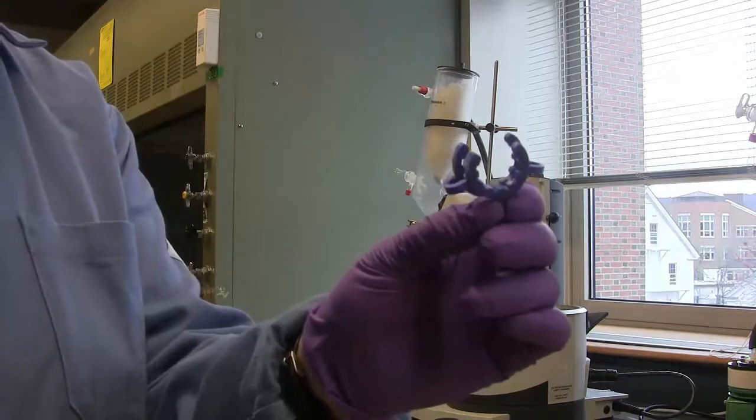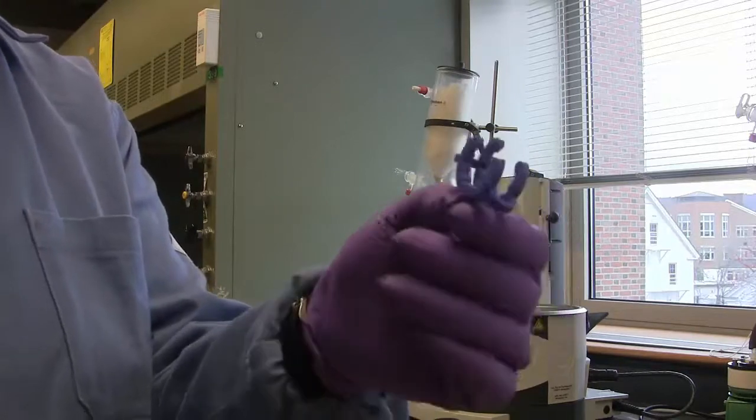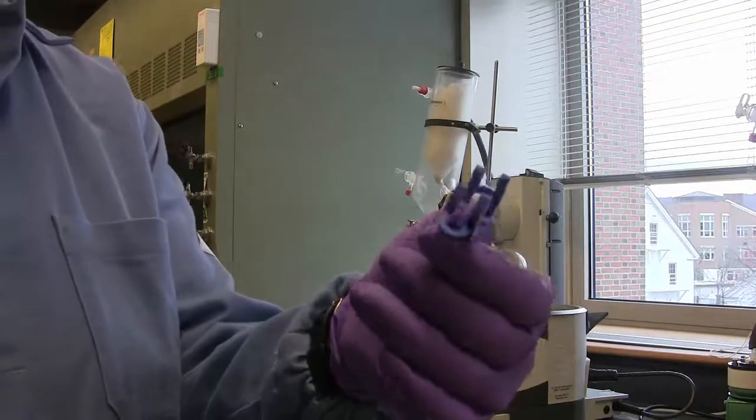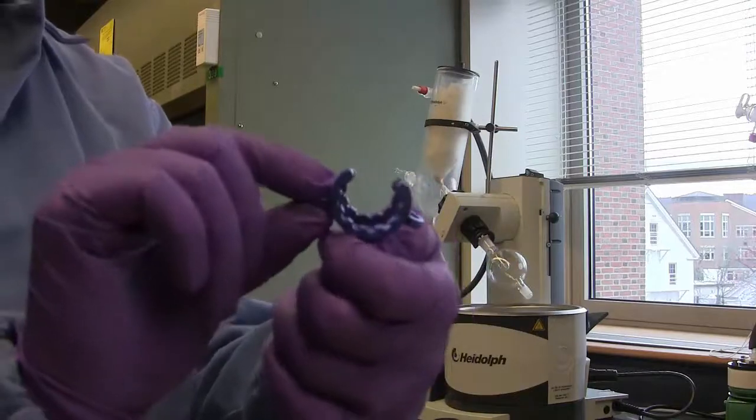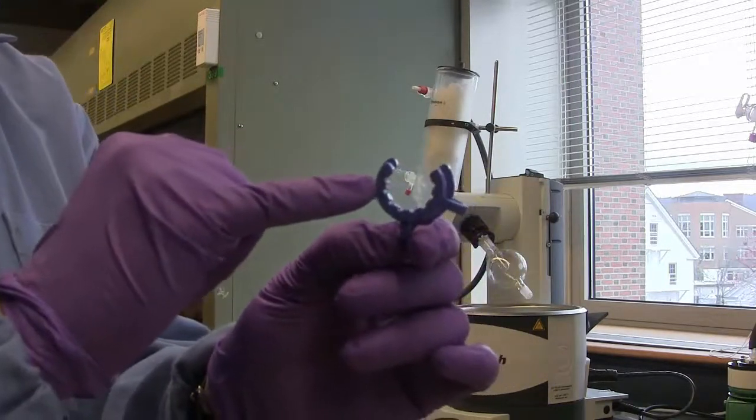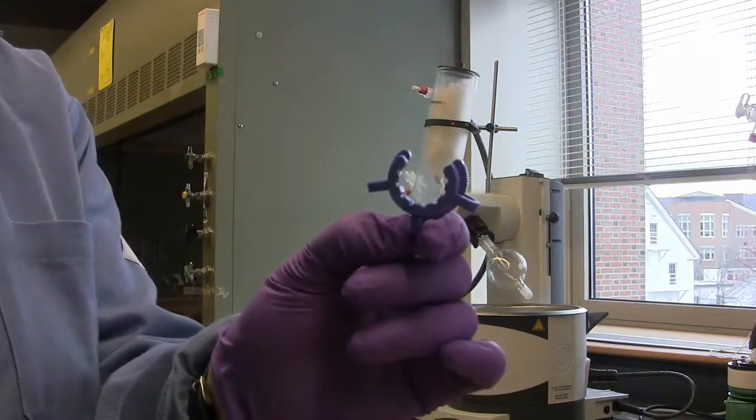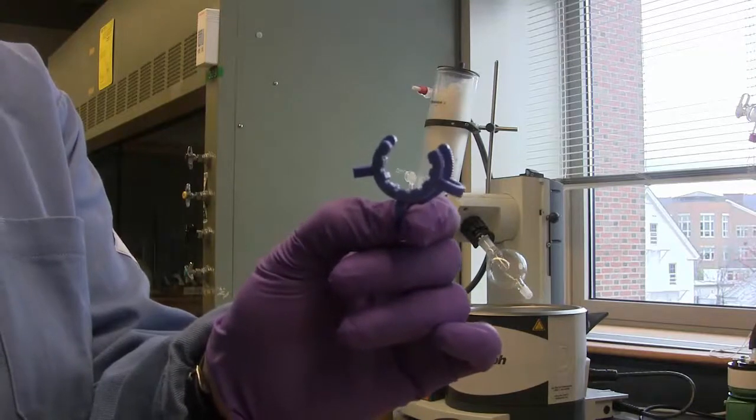Another important feature of the rotary evaporator is the use of a Keck clip. This is simply a plastic clip, and you'll notice that one side is a little bit larger than the other. The small side, facing the camera now, should be clipped onto the bump guard, or the male joint, when connecting ground glass joint wear.